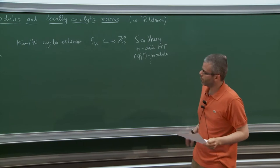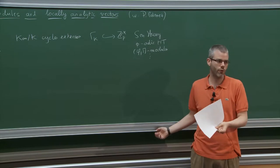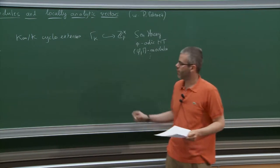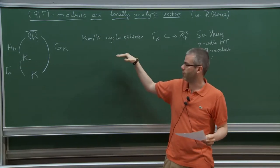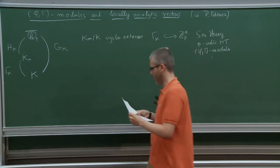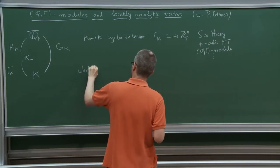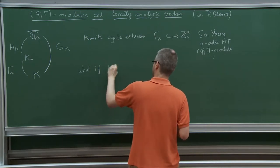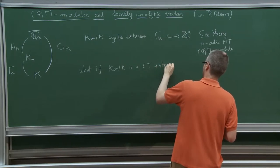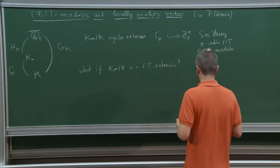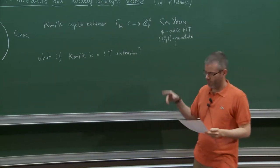What we'd like to do, with a view towards the p-adic Langlands correspondence for GL_h of F, is to replace the cyclotomic extension with the extension generated by the torsion points of our Lubin-Tate formal module. So what happens if K_∞ over K is a Lubin-Tate extension? Let me set up some notation.